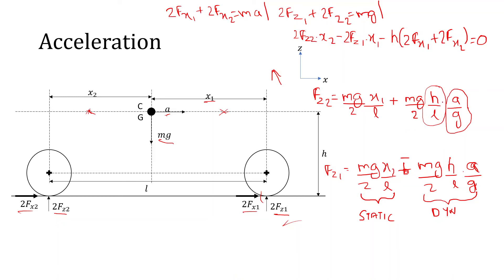The positive sign in the Fz2 equation makes sense because during acceleration we are pushed back, meaning weight is added to the rear wheels. By the same logic, that weight must be subtracted from the front wheels, which is why the dynamic term in the Fz1 equation is negative.